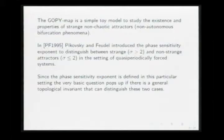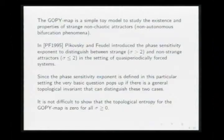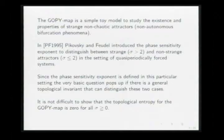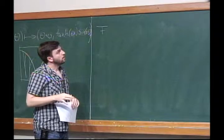The problem in these more applied maps is that they have a perturbation with respect to theta that is not multiplicative but additive, and this makes it on a technical level much more difficult to study. So that's the reason why you first try to understand systems with a multiplicative perturbation. In 1995, Pekowski and Freud introduced a notion called the phase sensitivity exponent, to distinguish between the non-strange case — just the zero line as attractor — and the strange case. This was defined in the particular setting of quasi-periodic forcing. The natural question is whether you can find a general topological invariant that distinguishes these two cases, since the topological entropy is zero for all parameters in both the non-strange and strange cases.